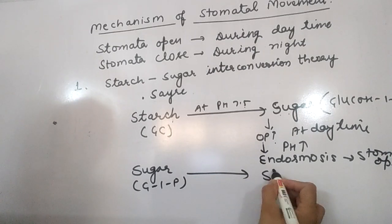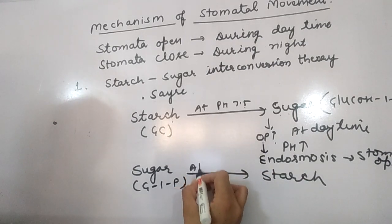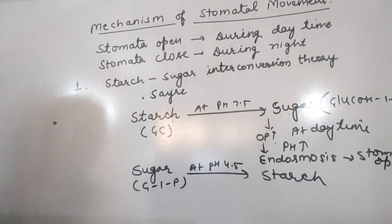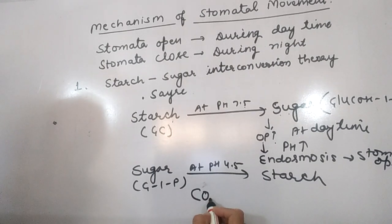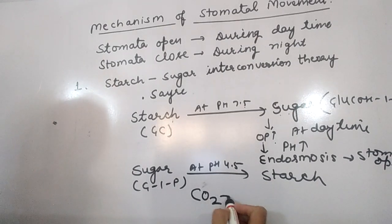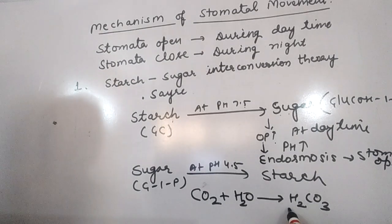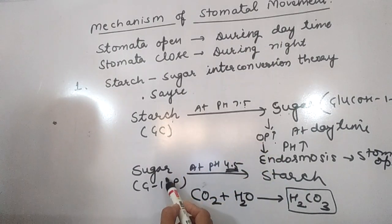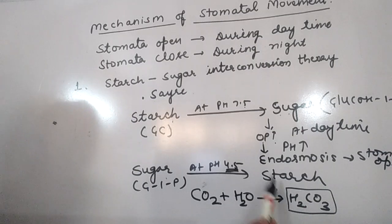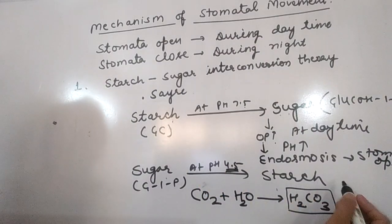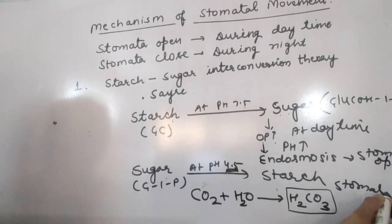During night, there is no photosynthesis, so CO2 accumulates. CO2 reacts with water to form carbonic acid (H2CO3). This lowers the pH level, and sugar converts back into starch.